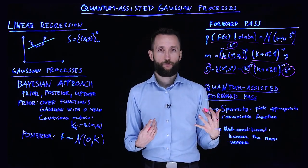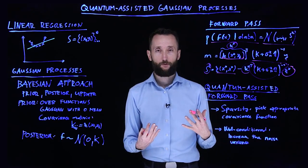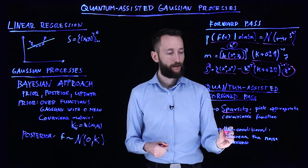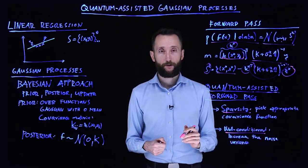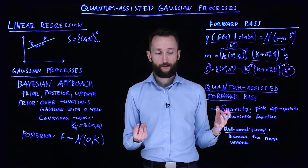And I mentioned that there are two very important conditions for being able to run quantum matrix inversion. One is sparsity and the other is that the matrix must be well conditioned. And the good news is that both can be fulfilled in this case.